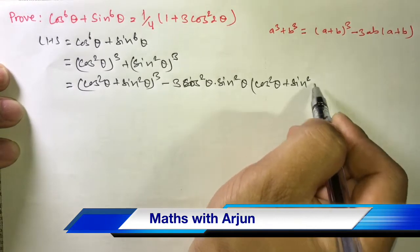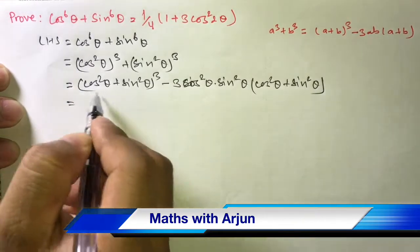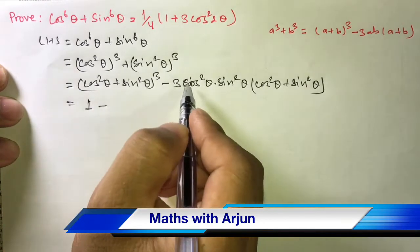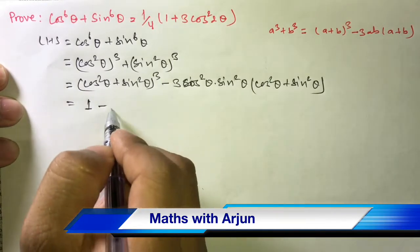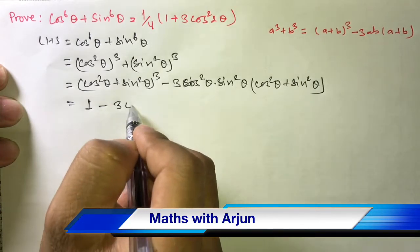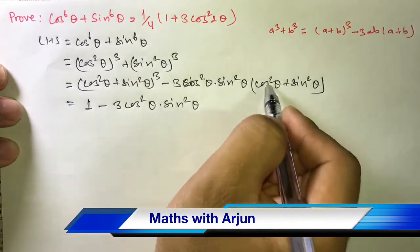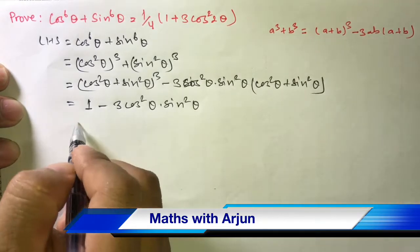Here cos²θ + sin²θ = 1, so 1³ = 1 minus 3cos²θ·sin²θ, and this cos²θ + sin²θ again equals 1.